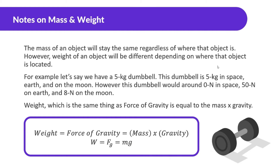Mass and weight: the mass of an object will stay the same regardless of where that object is. However, the weight of an object will be different depending on where that object is located. For example, let's say we have a five kilogram dumbbell. This dumbbell is five kilograms in space, on Earth, and on the moon. However, this dumbbell would be around zero newtons in space, 50 newtons on Earth, and eight newtons on the moon. So the weight is pretty different.